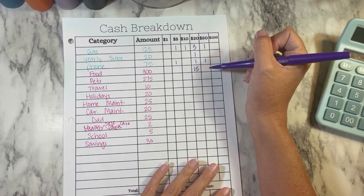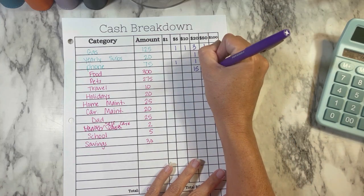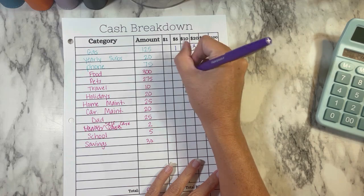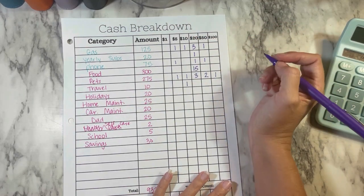Pets is $275. We're going to do one $100, two $50s, three $20s, one $10, and one $5. Travel is getting $10, so we're just going to do a $10.